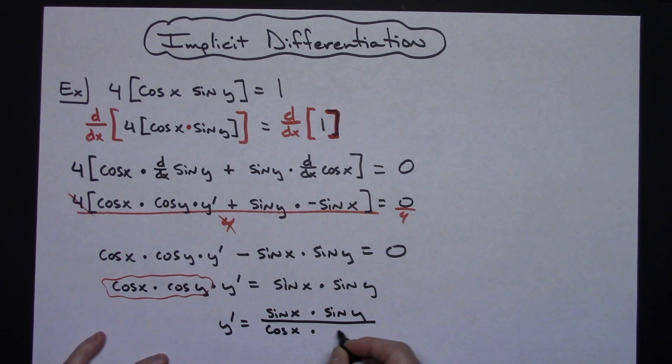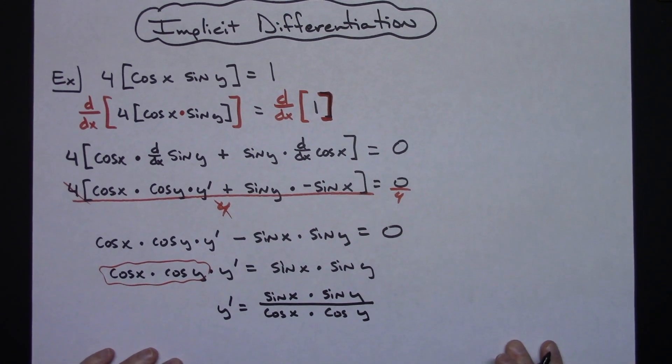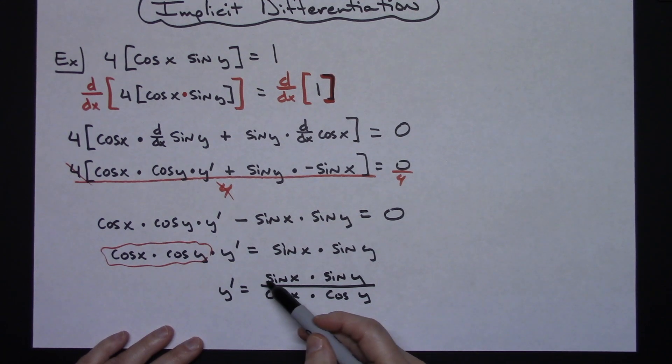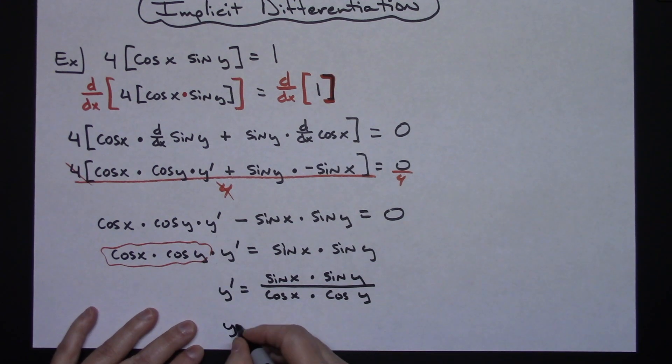So y prime is equal to sine x times sine y over cosine x times cosine y. All right now a lot of times my students are going to want to stop right there but hopefully you've got enough of your trig identities memorized that you recognize oh hey this is sine over cosine sine over cosine we can switch that out for a tangent. So a much cleaner answer would be y prime is equal to tangent of x times tangent of y.